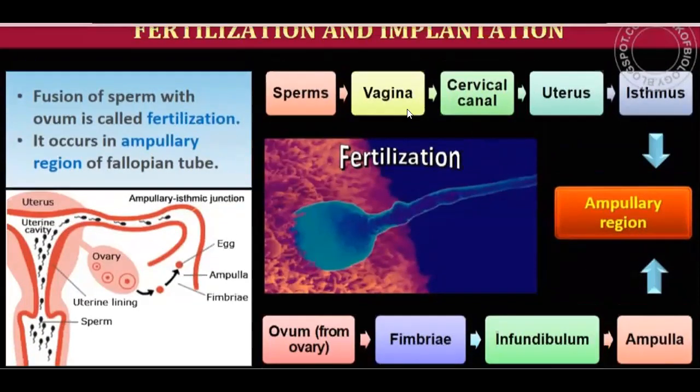Fusion of sperm with ovum is called fertilization. It occurs in the ampullary region of the fallopian tube. The fallopian tube has three regions: fimbriae, ampulla, and isthmus. The site of fertilization is the ampullary region of the fallopian tube.